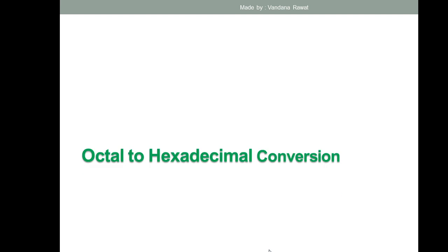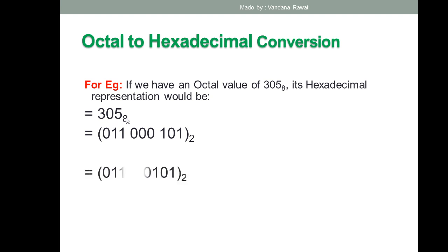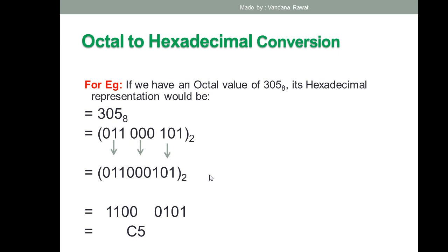Let's take another example: convert octal 305 to hexadecimal. Convert each digit to binary: 5 is 101, 0 is 000, and 3 is 011. The full binary equivalent is 011 000 101. Now make groups of four from the LSB side: 0101 and 1100. From the table, 0101 is 5 and 1100 is C. So the final answer is hexadecimal C5.